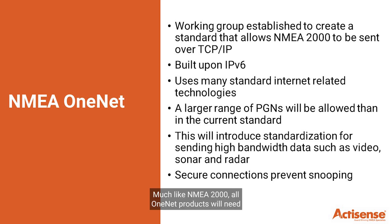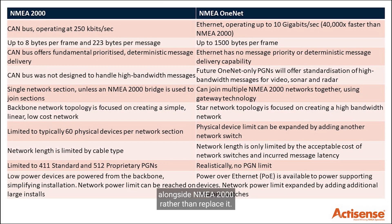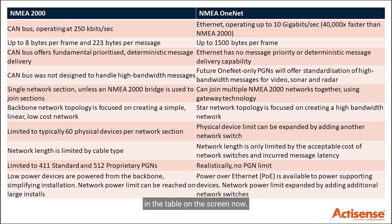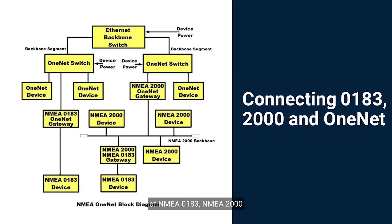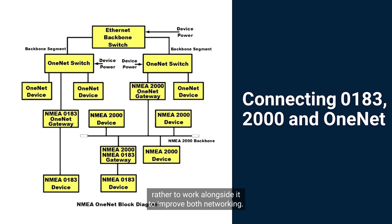Much like NMEA 2000, all OneNet products will need to be certified by the manufacturer and verified by the NMEA. OneNet has been designed to work alongside NMEA 2000 rather than replace it. There are some differences between the two and these comparisons can be seen in the table on screen. To help with the understanding of how OneNet is going to work with existing networks, a diagram shows a combination of NMEA 0183, NMEA 2000 and OneNet devices all working together. Remember that OneNet is not designed to replace NMEA 2000, rather to work alongside it to improve boat networking.